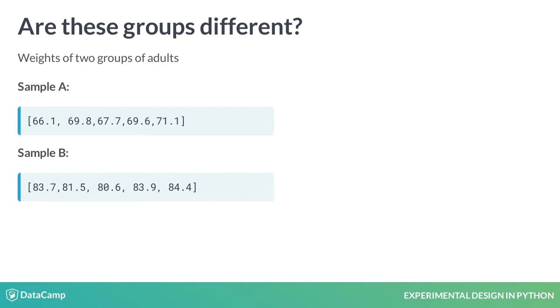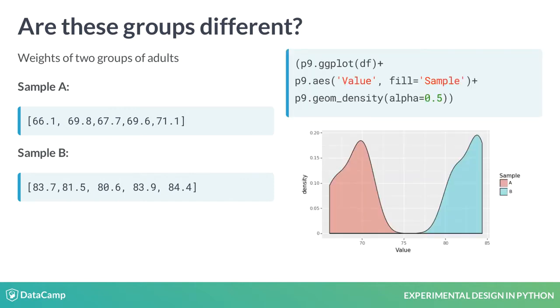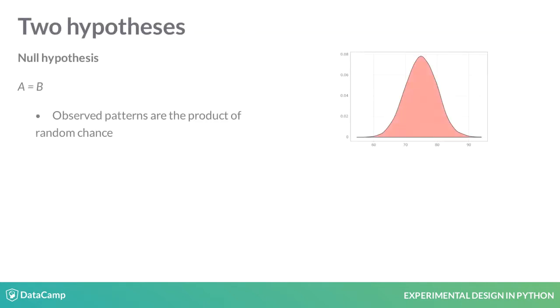Let's say we have the body weights of two samples from two groups of people, A and B. When we plot it, we seem to see a trend where the group mean for sample B is larger than that for sample A. Is this difference real, or simply random variation?